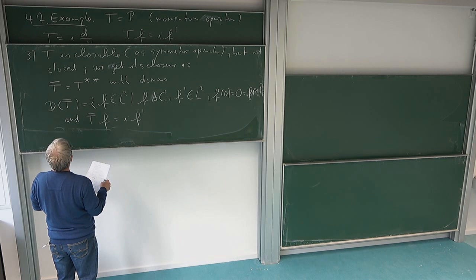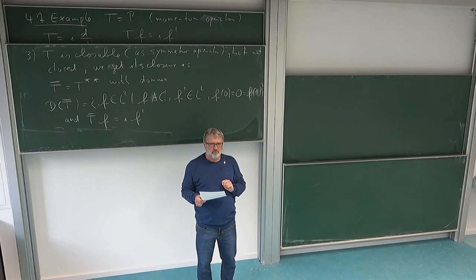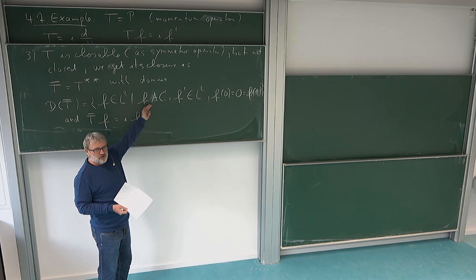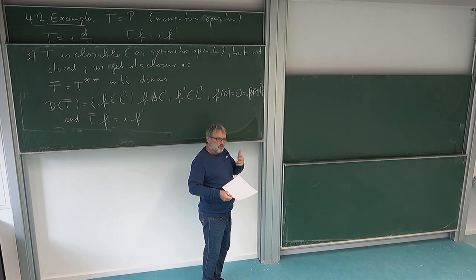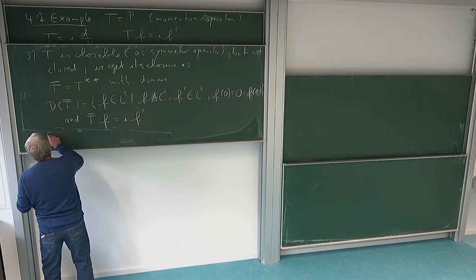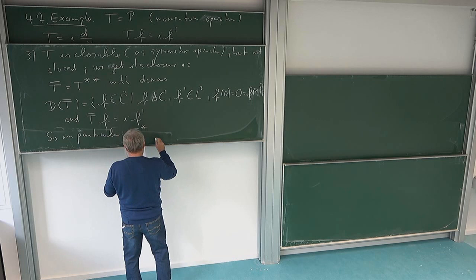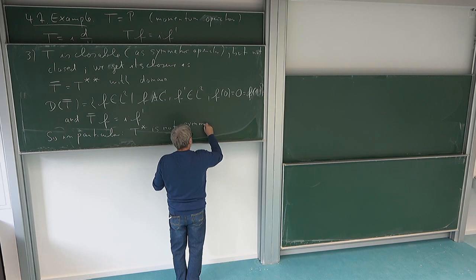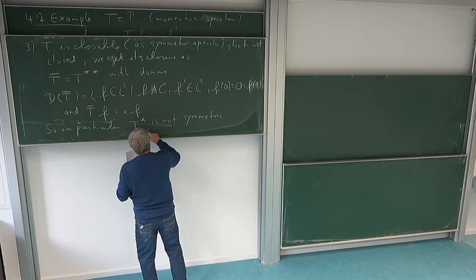This tells us that the adjoint of T is not symmetric anymore. Why not? Because if we take the adjoint of the adjoint, we get something with a smaller domain. The adjoint has no boundary conditions, and if I take the adjoint of that, I get the boundary conditions back, which means I'm making the domain smaller. But for a symmetric operator, the domain should become bigger. So from this we see that the adjoint is not symmetric anymore. The adjoint is an extension of our original operator, but we have extended it too far — we are losing the symmetry condition.